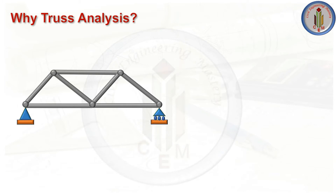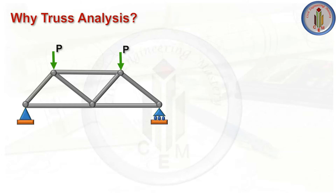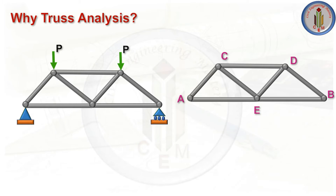Next, why do we need to do truss analysis? The main purpose of truss analysis is to calculate the axial force in each member. When a load is applied on the truss, internal forces develop in each truss member. We need to find out those internal forces in order to check whether the member cross-sections are sufficient to carry the load without any failure. Truss analysis gives the information needed to select the proper cross-section for each member.